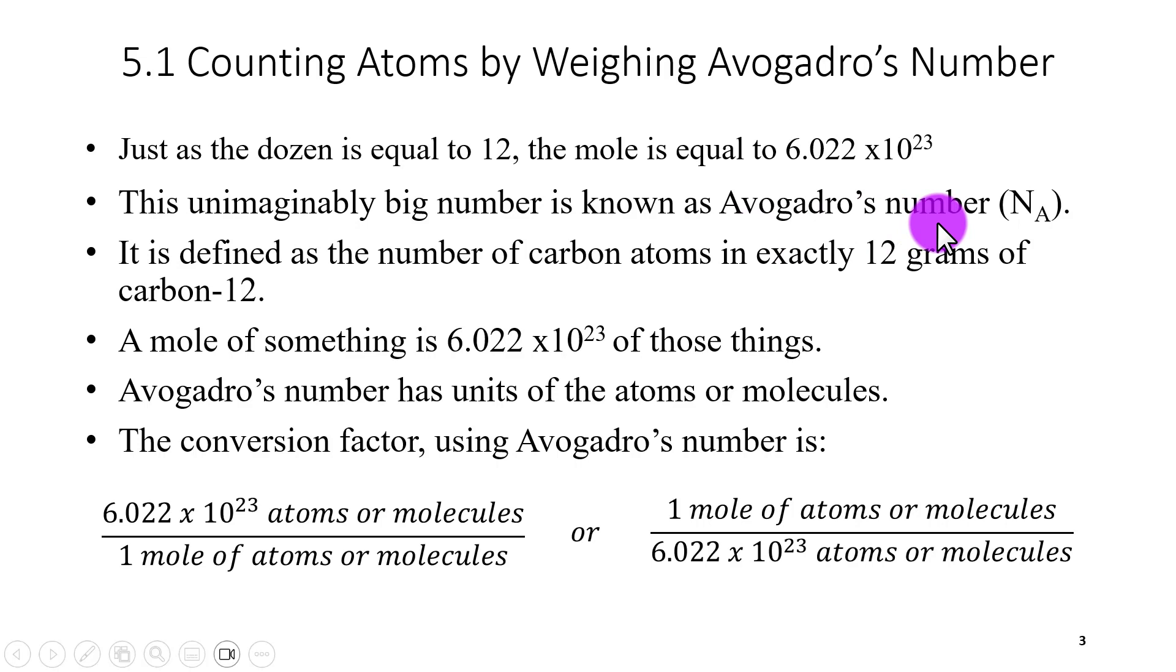As I said, this is known as Avogadro's number. Its symbol is big N with a subscript of big A. So N_A stands for Avogadro's number. Now the definition of Avogadro's number is the number of carbon atoms that are contained in exactly 12 grams of carbon-12. So if I had carbon-12 isotope and I measured exactly 12 grams of that, I would have 6.022 times 10 to the 23rd carbon-12 atoms. Everything else in the periodic table is expressed in terms of the number of carbons, so everything is relative to this number.